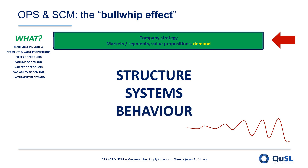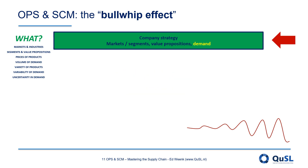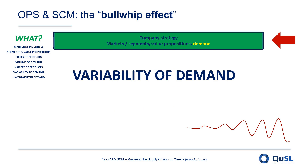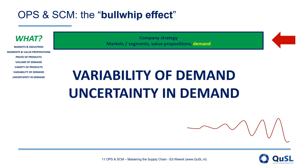For the sake of learning, I would encourage you to put some research and thinking into answering the question as to what those specific causes could be. It is important to see that ultimately the bullwhip effect causes variability, and in most cases also a lot of uncertainty in demand.